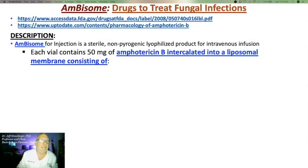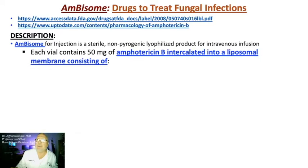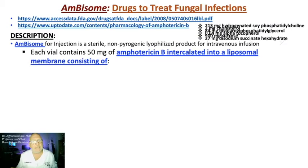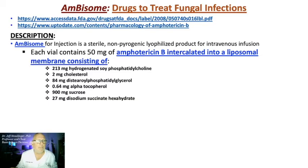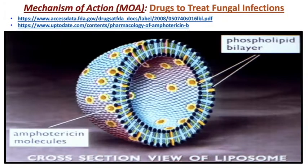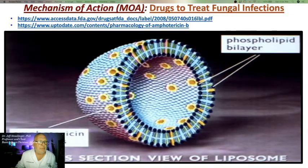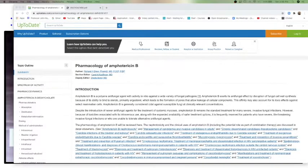With respect to amphotericin B, we're going to be talking about AmBisome — an injection that is a lyophilized product for IV infusion. The drug amphotericin B is intercalated into a liposomal membrane consisting of different lipids, mostly hydrogenated soy phosphatidylcholine. It forms a phospholipid bilayer into which amphotericin molecules are intercalated within this liposomal vesicle. There are up-to-date links on the pharmacology of amphotericin B.